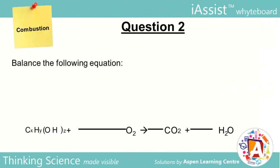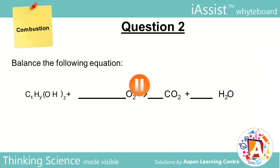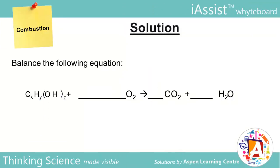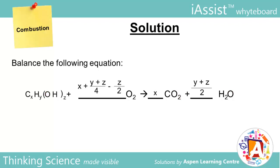Question 2 requires you to balance the following equation. Pause and try it out. First, balance the number of C. To avoid confusion, have a habit of putting 2 in the denominator of compounds such as H2O and O2. Calculate the number of H atoms and transfer directly, doing the same for O atoms. Note that you have to subtract Z from the number of O required. After simplifying the fraction, you will get the final answer.